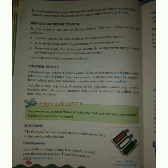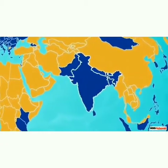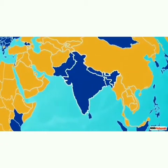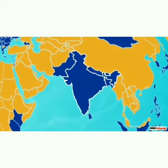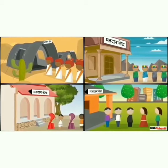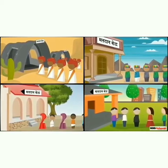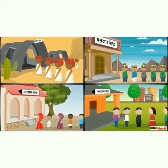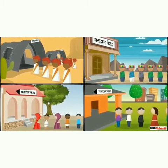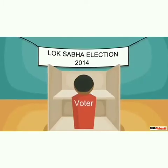Now, we will try to understand the process of election. With a population of over 1.21 billion, India is the largest democracy in the world. Evidently, the largest democratic electoral exercise in the world is also conducted here. Let us find out how it is done.